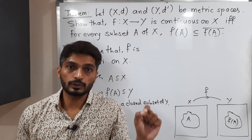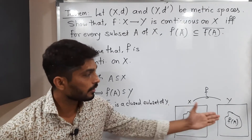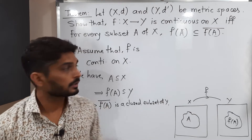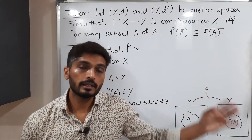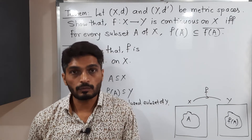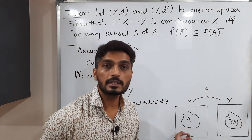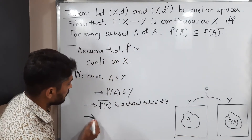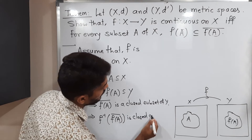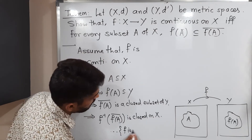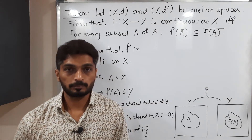As we have already seen, if you take the closure of any set, it is 100% a closed set. So taking the closure of f(A) gives a closed subset of Y. Now, the equivalent definition of a continuous function says: if you have any closed set in Y, its inverse image is closed in X. Therefore, f⁻¹(f(A̅)) is closed in X — call this Statement 1. This is very important.